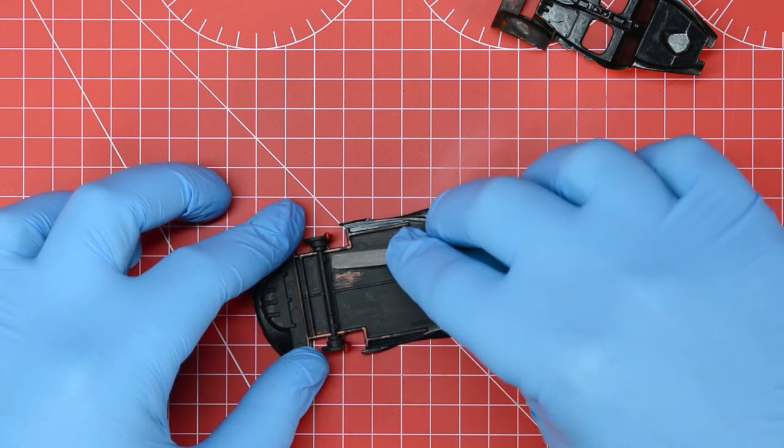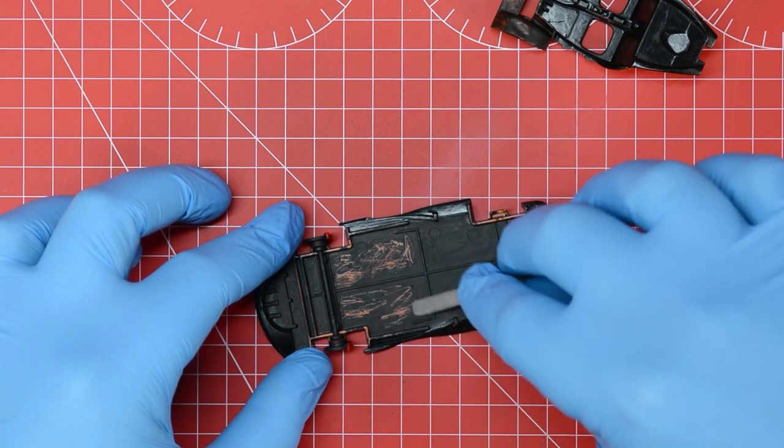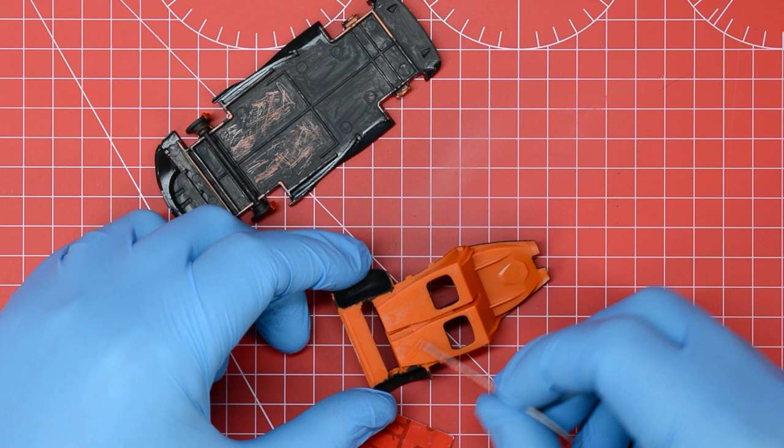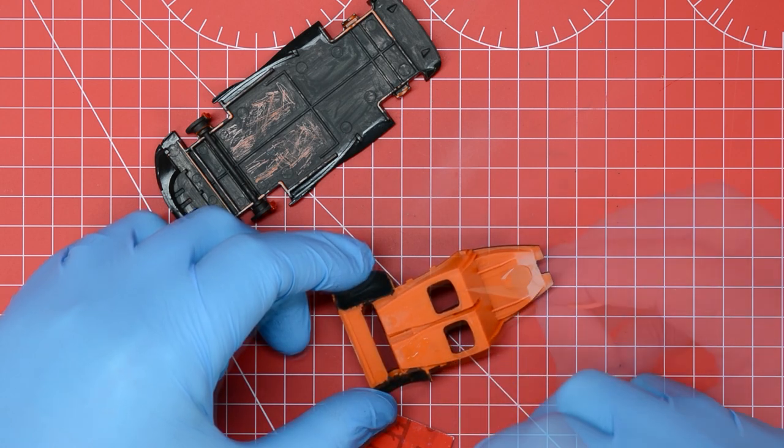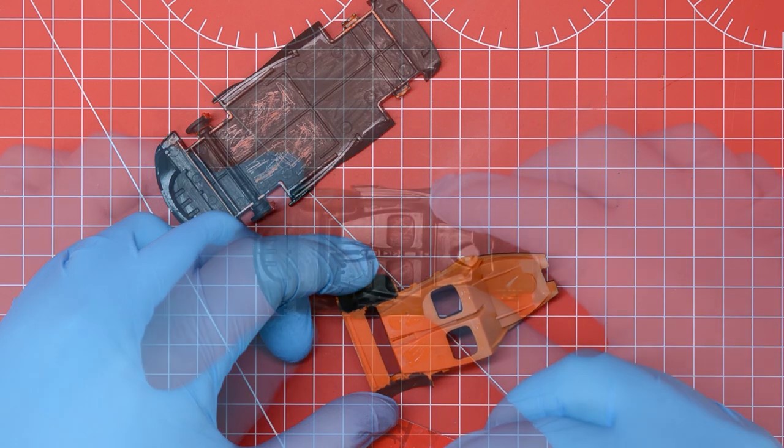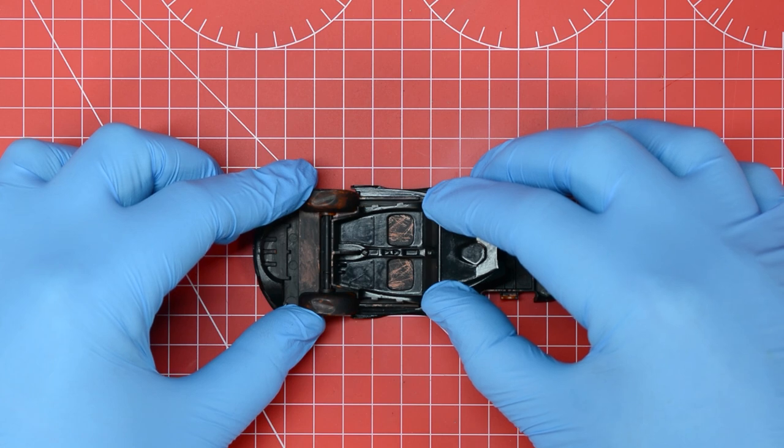While that's drying we'll remove some of the matte black paint from the lower portion of the car just to allow the polycement to get through to bare plastic to provide a good join. We can then add some polycement to the lower portion of the interior tub and once we've applied our glue we can press this into position and hold it for a few seconds.